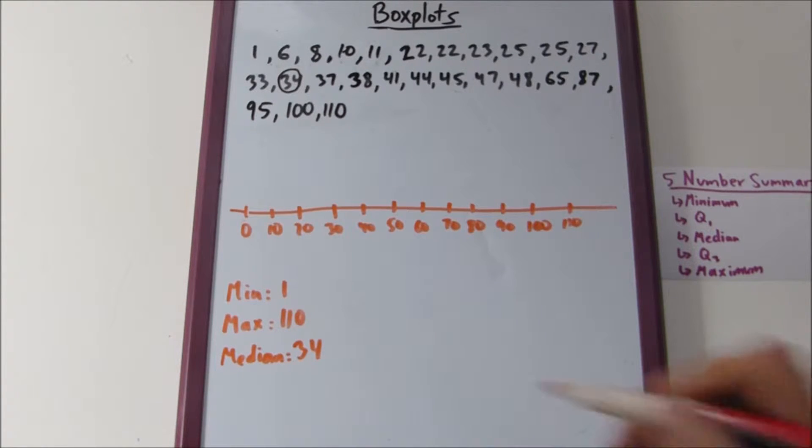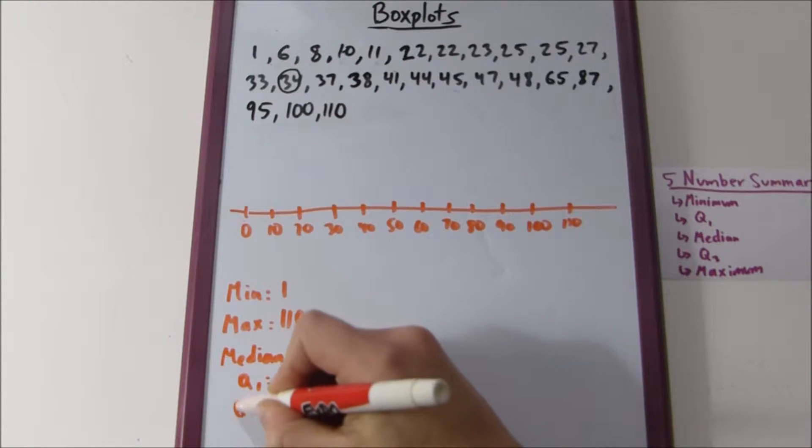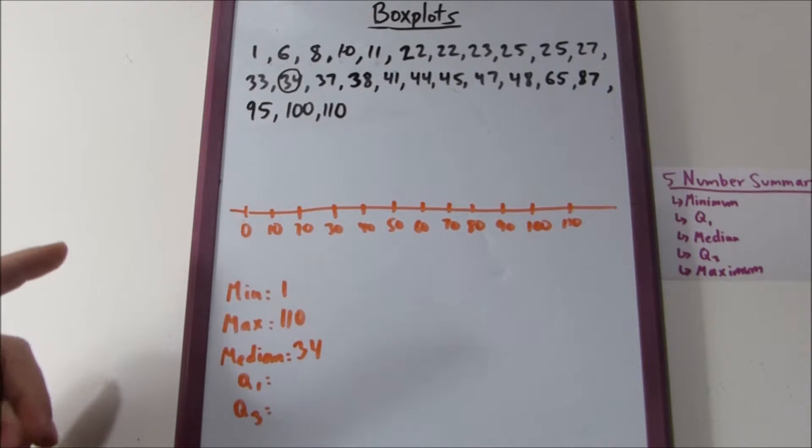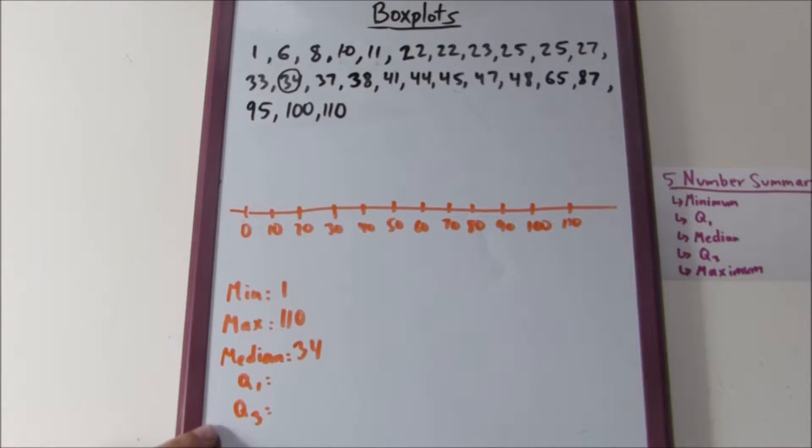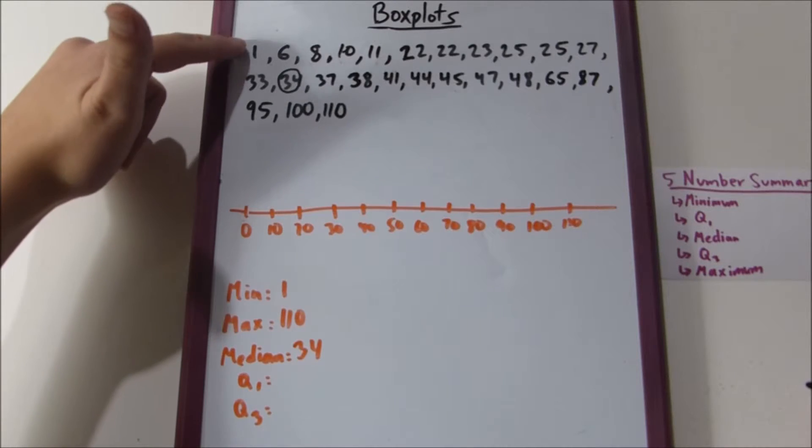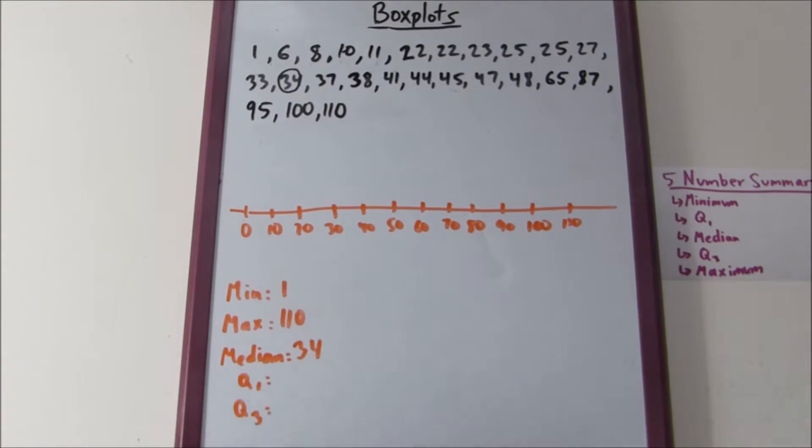Now, what quartile one and quartile three basically are - in terms of quartile one, it's the midway point between the minimum and the median. For quartile three, it's the midpoint between the median and the max. So, we know that there's twelve numbers between one and thirty-four. Since there's twelve numbers, and twelve is an even number, we know that our median is going to be the average of the two numbers in the middle.